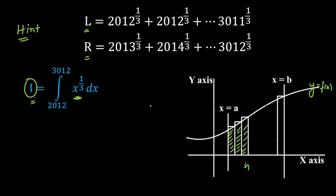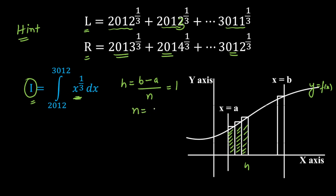If we take the width as h, then h equals (final minus initial) divided by the number of strips taken. Here, the numbers vary with a difference of 1, so the width h is equal to 1. From this, the number of strips is b minus a. Taking a = 2012 and b = 3012, we calculate n = 3012 minus 2012 = 1000. So we have to take 1000 rectangles to calculate the integration.